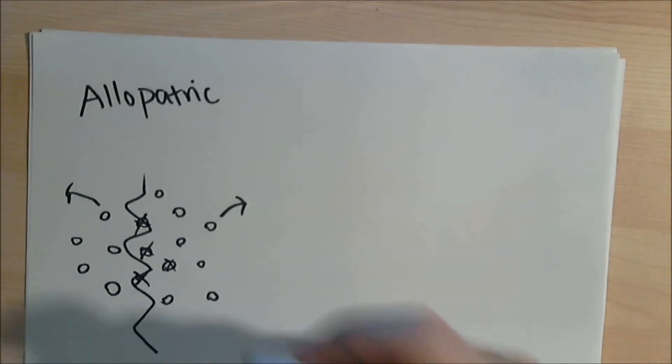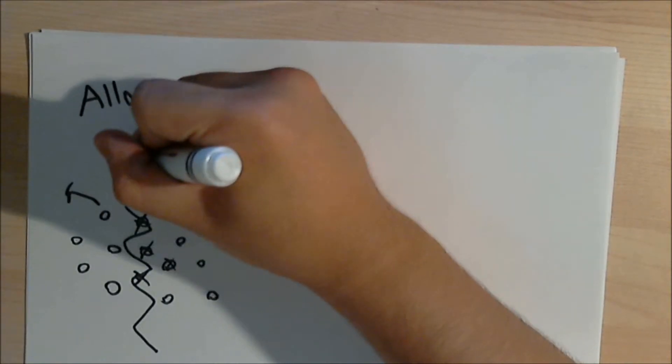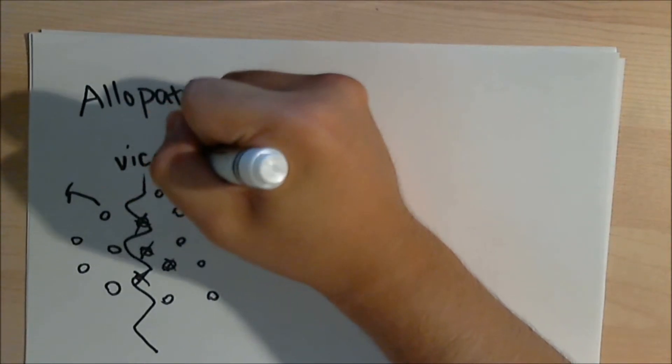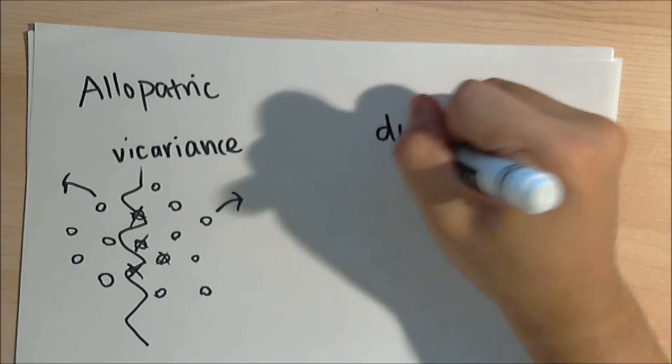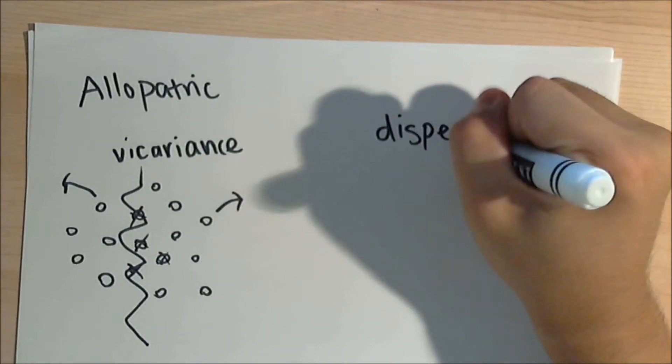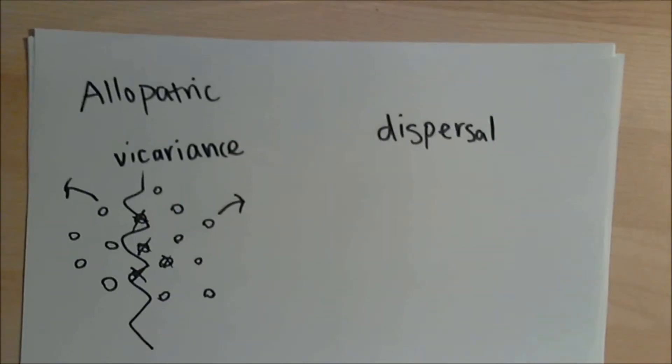So this lion example was an example of vicariance speciation. There's also dispersal speciation, where species are geographically isolated but more by the founder effect.